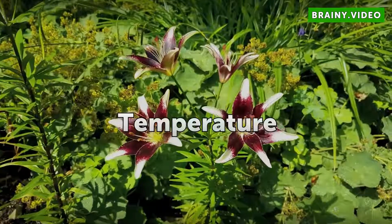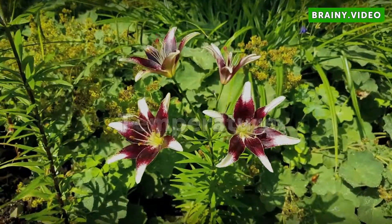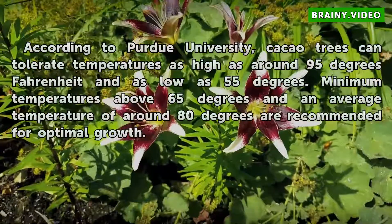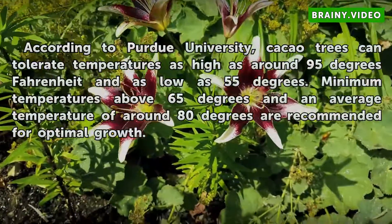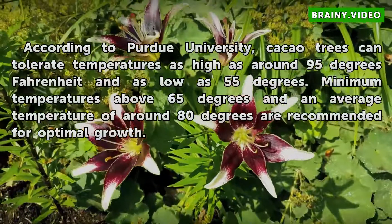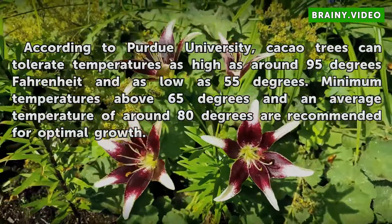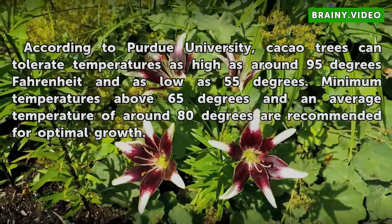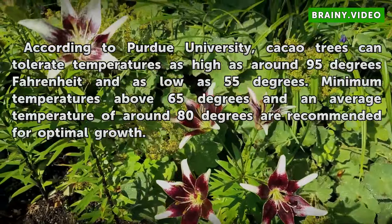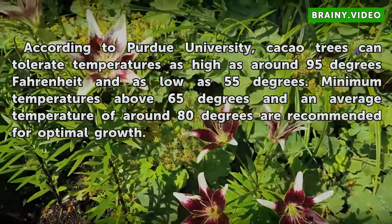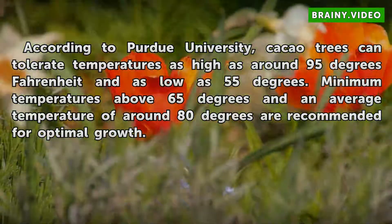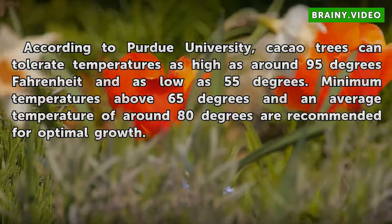Temperature. According to Purdue University, cacao trees can tolerate temperatures as high as around 95 degrees Fahrenheit and as low as 55 degrees. Minimum temperatures above 65 degrees and an average temperature of around 80 degrees are recommended for optimal growth.